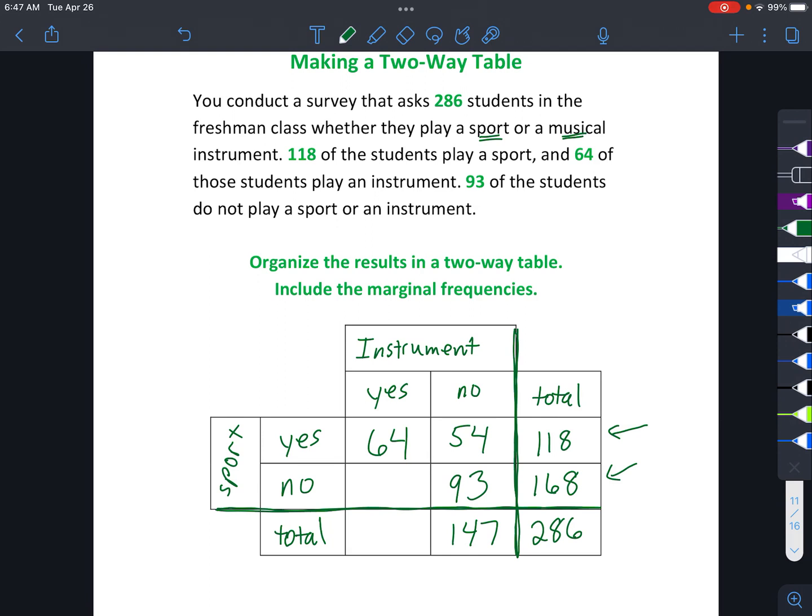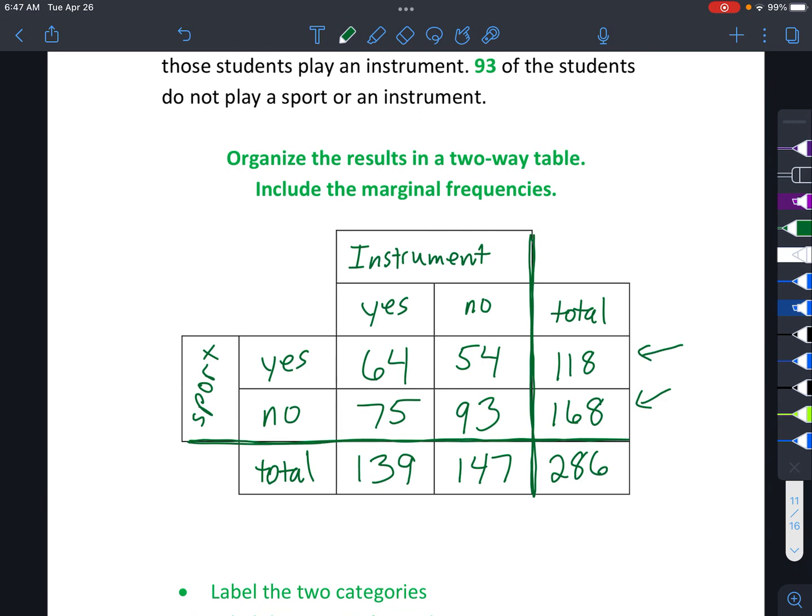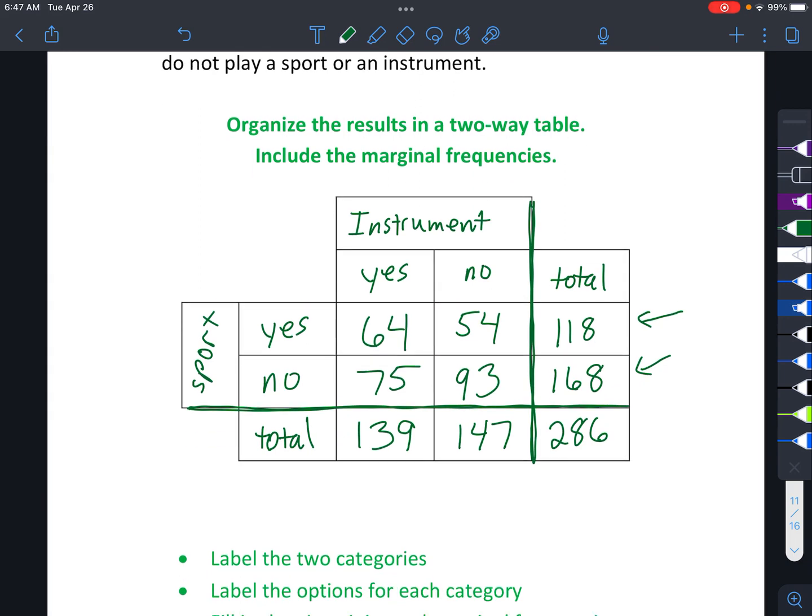And you might say, wait, we're kind of stuck here. But remember, we've got different directions that we can work from. And so now we can subtract 168 minus 93 to get 75. And now we can add these two. You could have done this in some slightly different orders. As long as you get the right answer, then you're good.